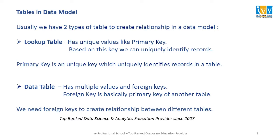Let's understand what tables in a data model are. We usually have two types of tables to create relationships in our data model. The first is the lookup table, which has unique values like a primary key. Based on this key, we can uniquely identify records. A primary key is a unique key which uniquely identifies records in a table. The second is the data table, which has multiple values and foreign keys. A foreign key is basically the primary key of another table. We need foreign keys to create the relationship between the different tables.